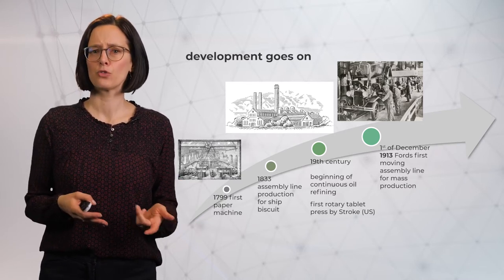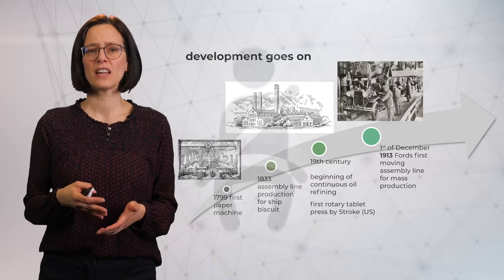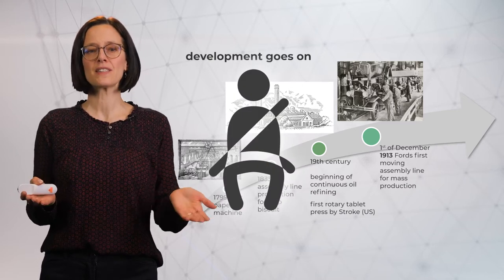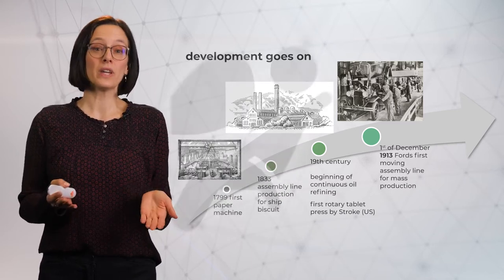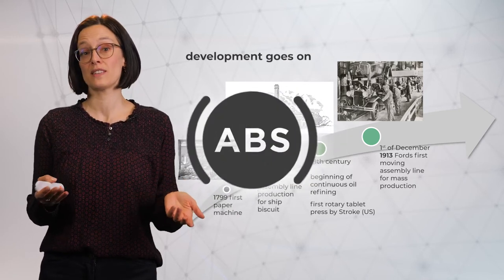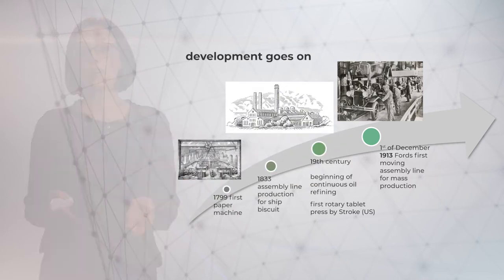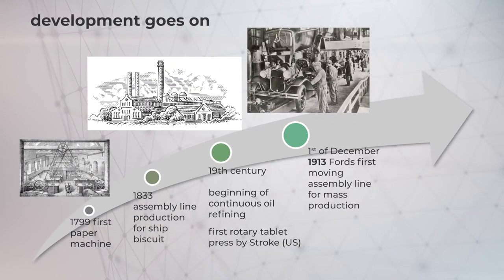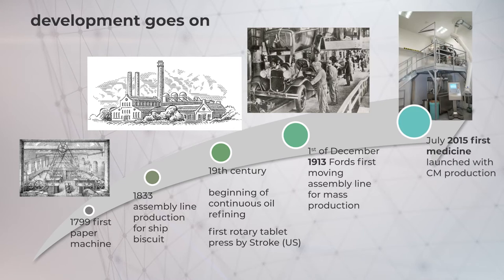Looking again at cars: at first, they had no seat belts, not even a decent roof. Now we have side and front airbags and driving assistance to help us stay safe. So while in other industries there was a lot of progress with regards to the method of production, in the pharmaceutical field it took until 2015 for the first product to be launched using continuous manufacturing technologies.